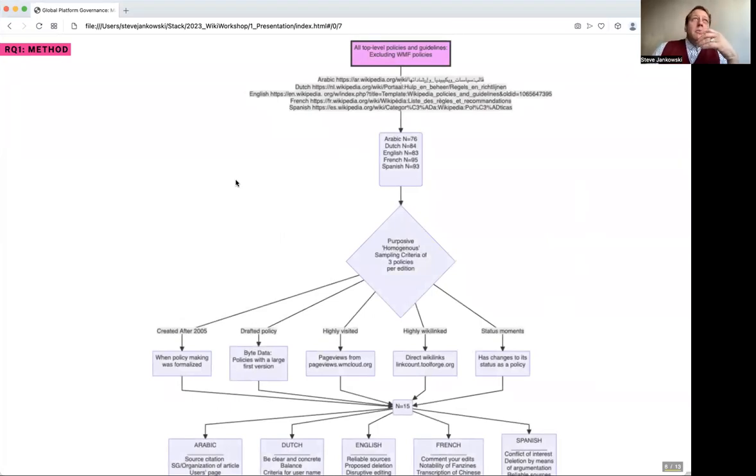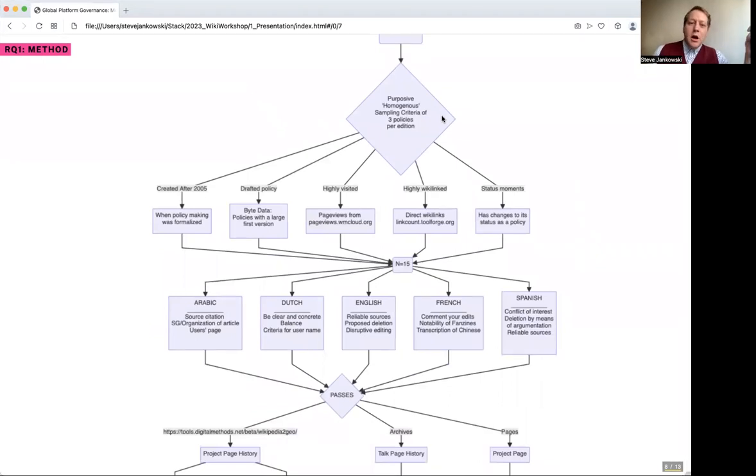The main corpus for research question one comes through looking at five language editions: Arabic, Dutch, English, French, and Spanish. We assembled a corpus of all the major policies and guidelines for each of those editions using some of the lists available on each edition to navigate that. We wanted to make a purposeful homogenous sampling criteria, three policies per edition.